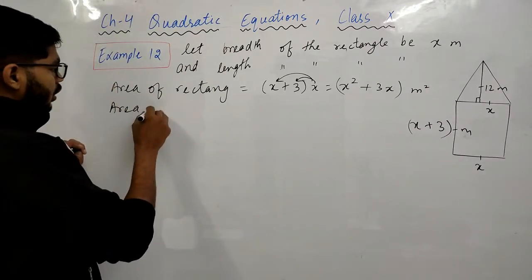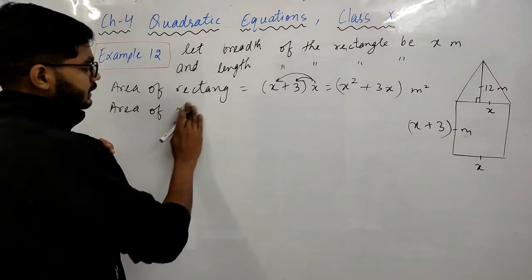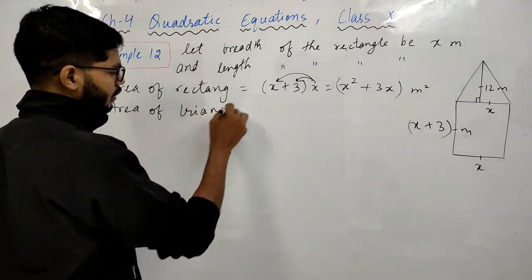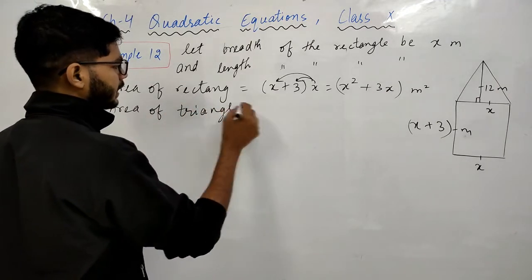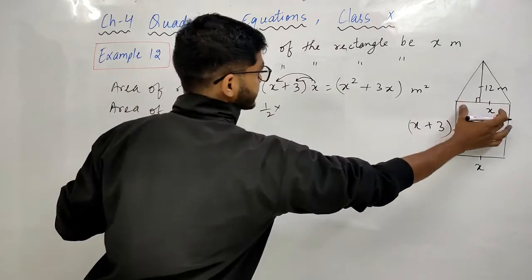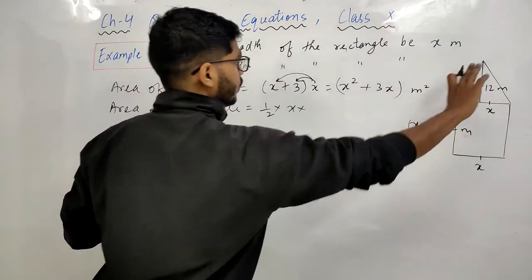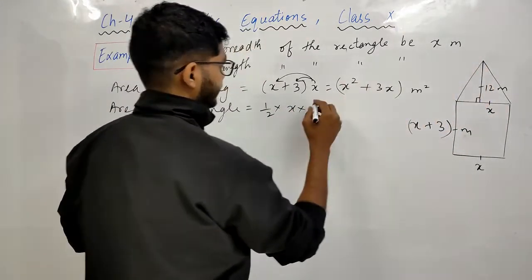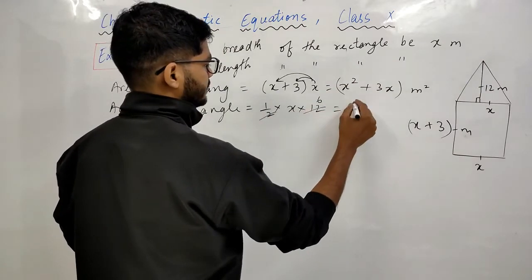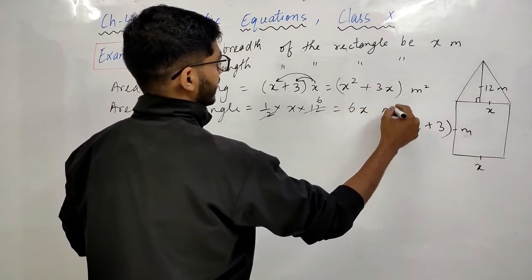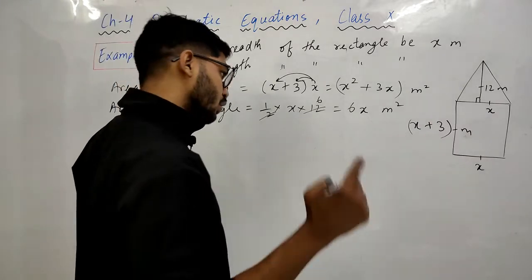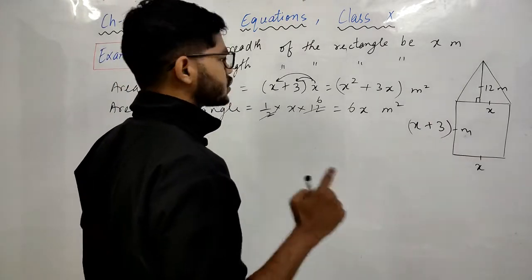अब area of triangle देखते हैं। Formula है: half × base × height। यहाँ base = x और height = 12, तो area of triangle = ½ × x × 12 = 6x meter square।